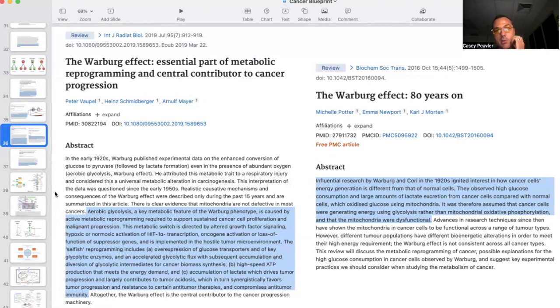The next paper I want to go over is talking about the Warburg effect. Influential research by Warburg and Corey in the 1920s ignited interest of how cancer cell energy generation is different from normal cells. They observed high glucose consumption and large amounts of lactate excretion from cancer cells compared to normal cells, which oxidized glucose using mitochondria. It was therefore assumed that cancer cells were generating energy using glycolysis rather than mitochondrial oxidative phosphorylation and that the mitochondria were dysfunctional. They knew this in the 1920s.